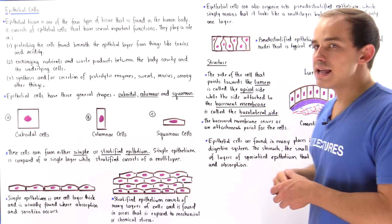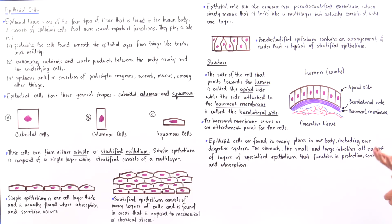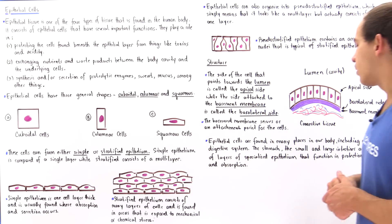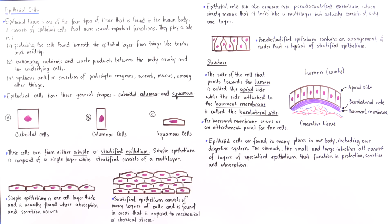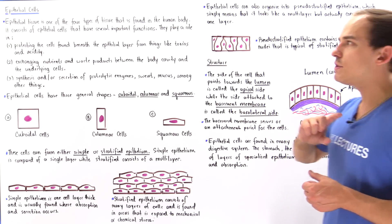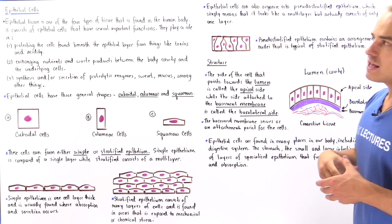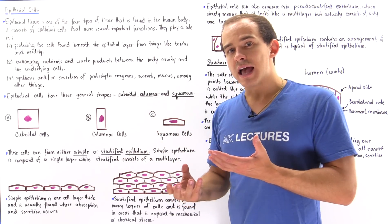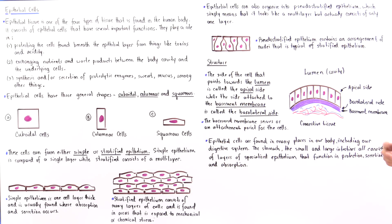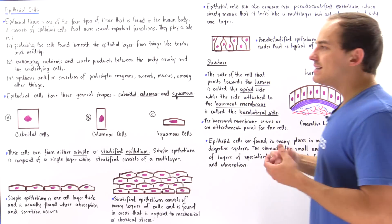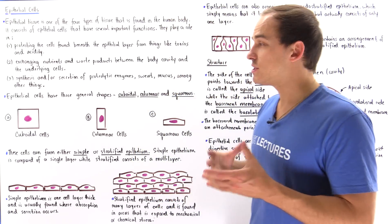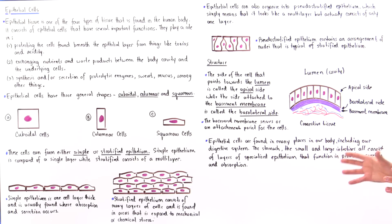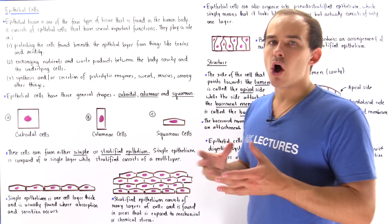Epithelial cells are found in our digestive system as well as many other places in our body, for example our skin. The stomach, small and large intestines all consist of layers of these specialized epithelial cells. These epithelial cells not only protect our internal cells and organs but they also secrete and absorb many different types of nutrients. We'll see how this takes place in the next several lectures when we focus on the stomach, the small intestine, and the large intestine.